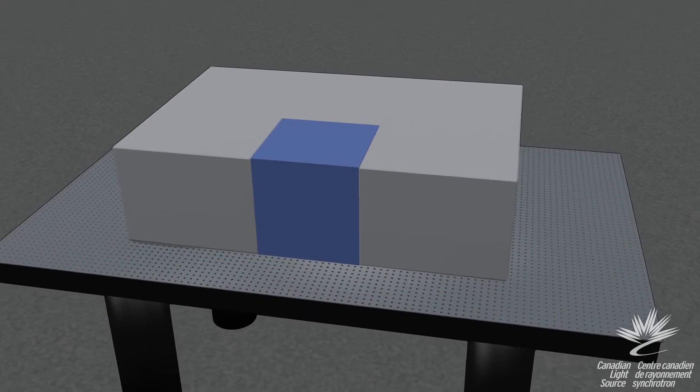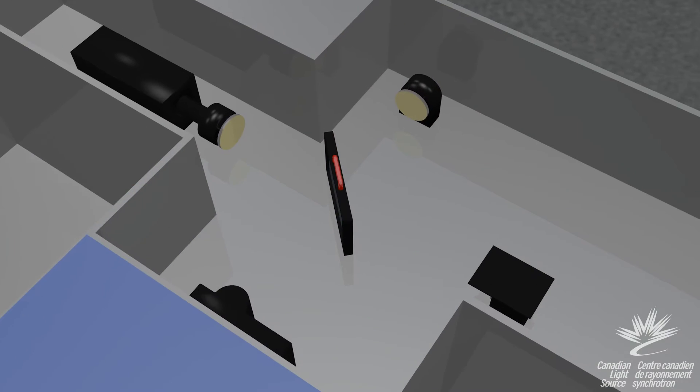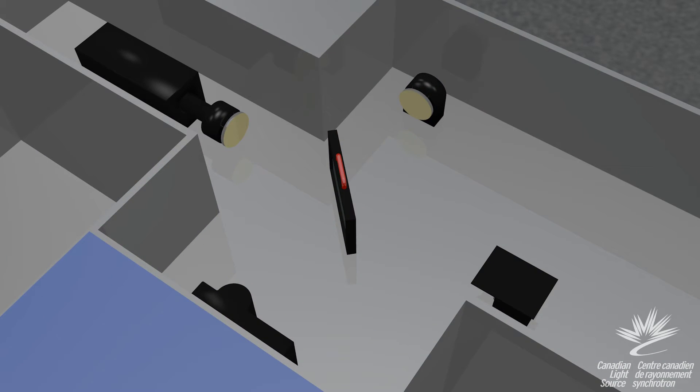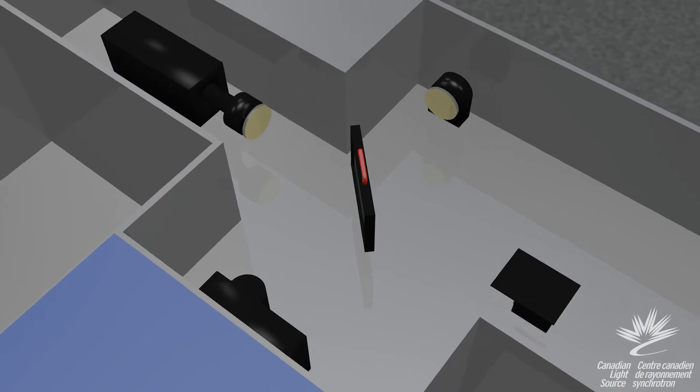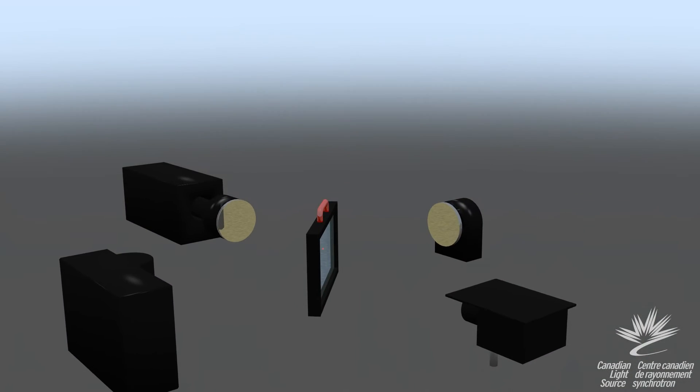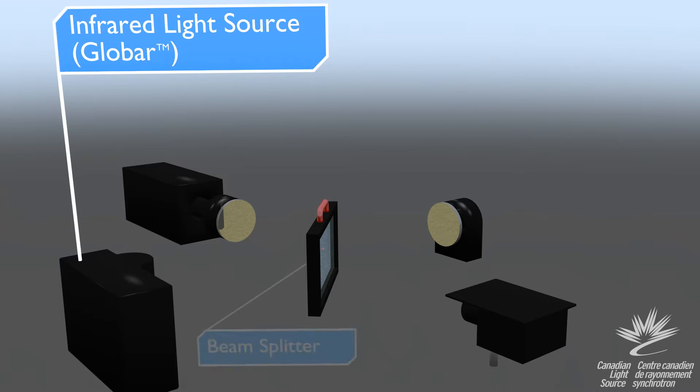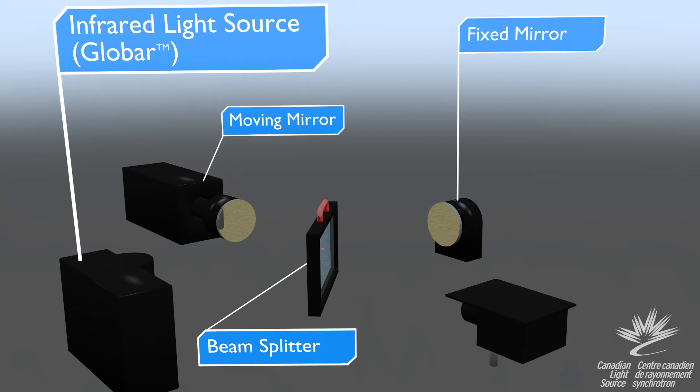You may be familiar with the original Michelson interferometer. It is a simple optical system used to create interfered light at certain wavelengths. The interferometer consists of five essential components: the IR light source, the beam splitter, two mirrors—one fixed and one that can be moved—and a detector.